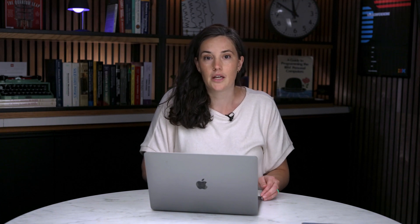So we'll need three separate circuits for each of these three cases, but in this video, we'll just do one. You can go to the module linked in the description for the full thing. If Rihanna measures along B, then our circuit looks like this, where RY is a rotation of 120 degrees to change Rihanna's measurement axis.